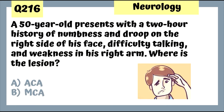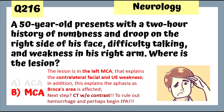Question 216: A 50-year-old presents with a two-hour history of numbness and droop on the right side of his face, difficulty talking, and weakness in his right arm. Since everything is on the right — the right face and right arm — this is the MCA. The MCA can affect the right face, the right arm, and speech. The lesion is in the left MCA because it's contralateral. The next step, since we're dealing with a stroke, is CT without contrast to rule out hemorrhage and perhaps begin TPA.